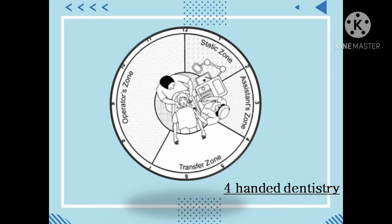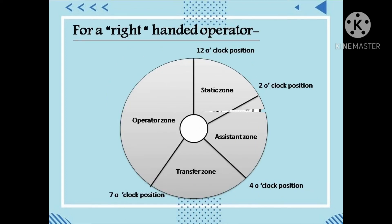This is a diagrammatic representation of four-handed dentistry with all four zones illustrated. For exams, here is an easy representation of the four zones using clock positions, which indicates a right-handed operator. The operator zone is from 7 o'clock to 12 o'clock, the static zone from 12 o'clock to 2 o'clock, the assistant zone from 2 to 4 o'clock, and the transfer zone from 4 to 7 o'clock.